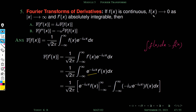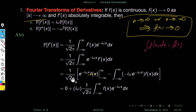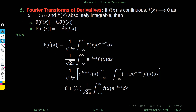We use the assumption that whenever x tends to infinity or x tends to minus infinity, f(x) tends to 0. So when x equals infinity or minus infinity, the boundary term e^{-iωx}·f(x) vanishes. Therefore the first term is completely zero.